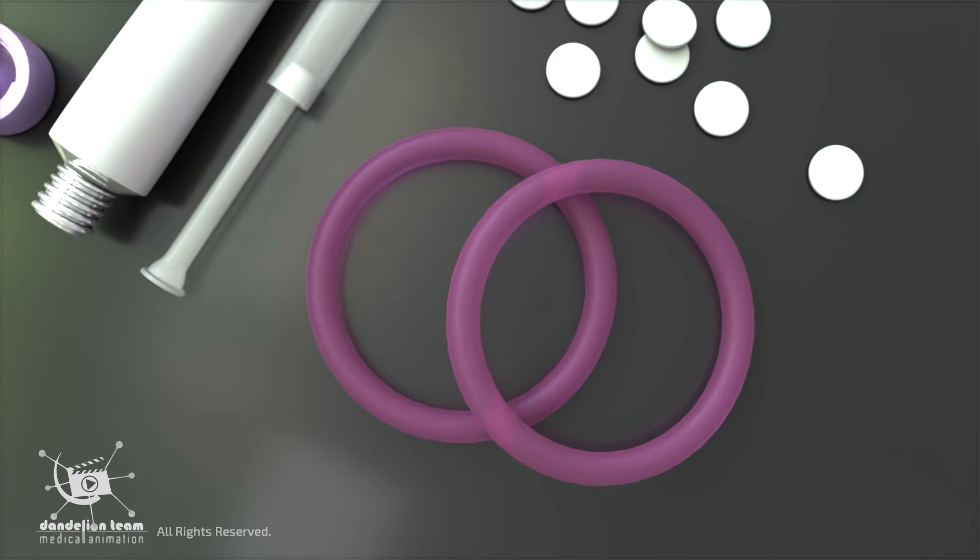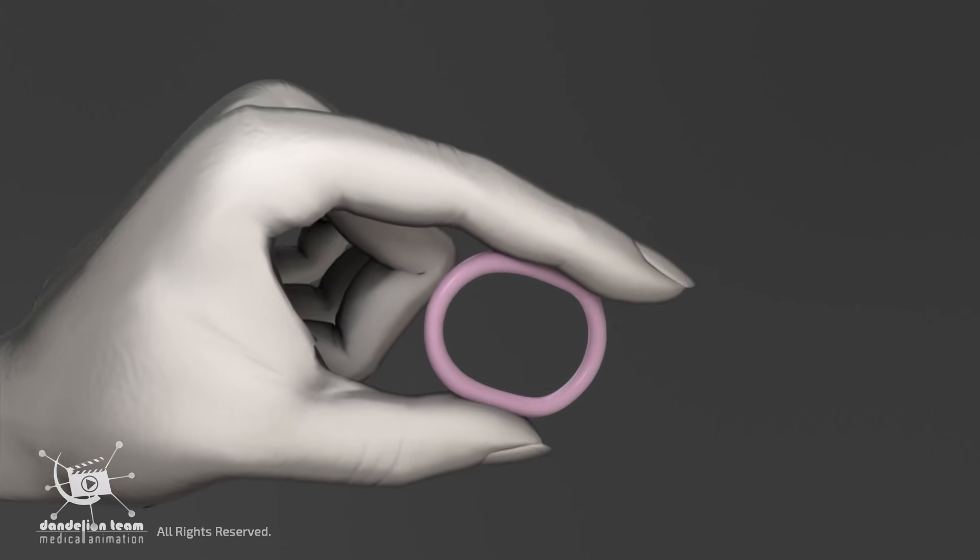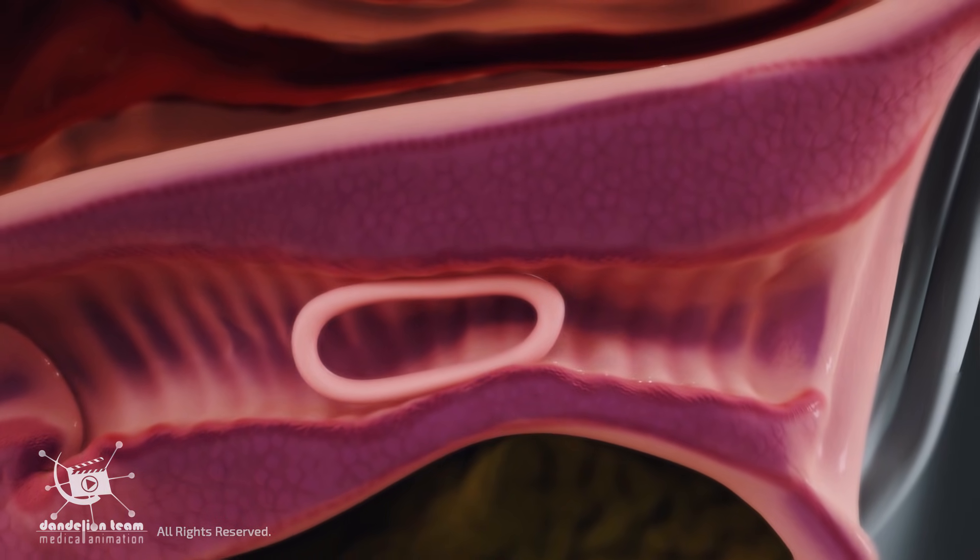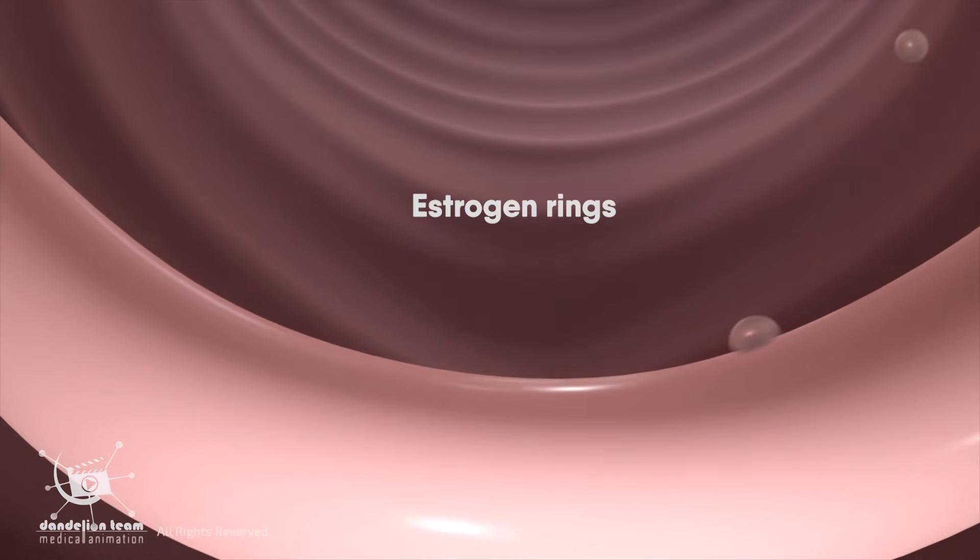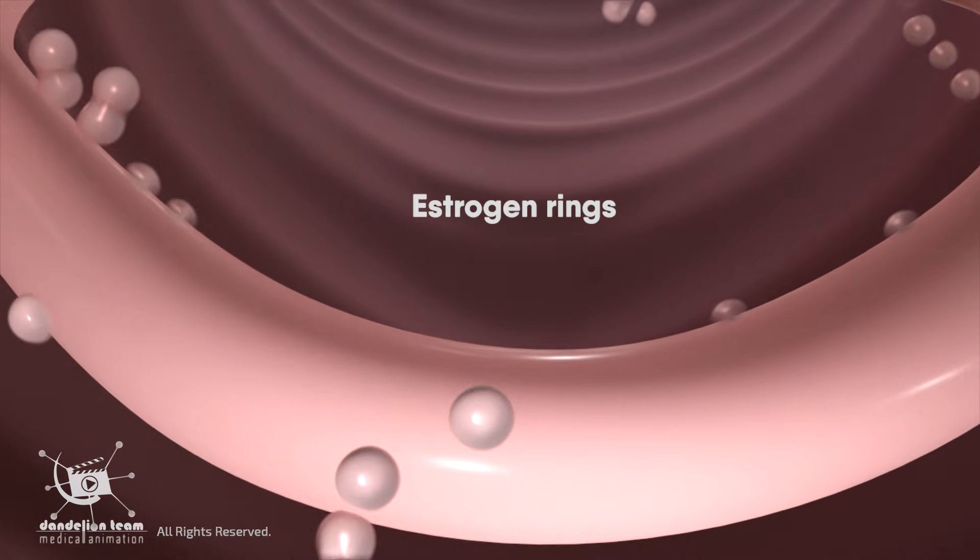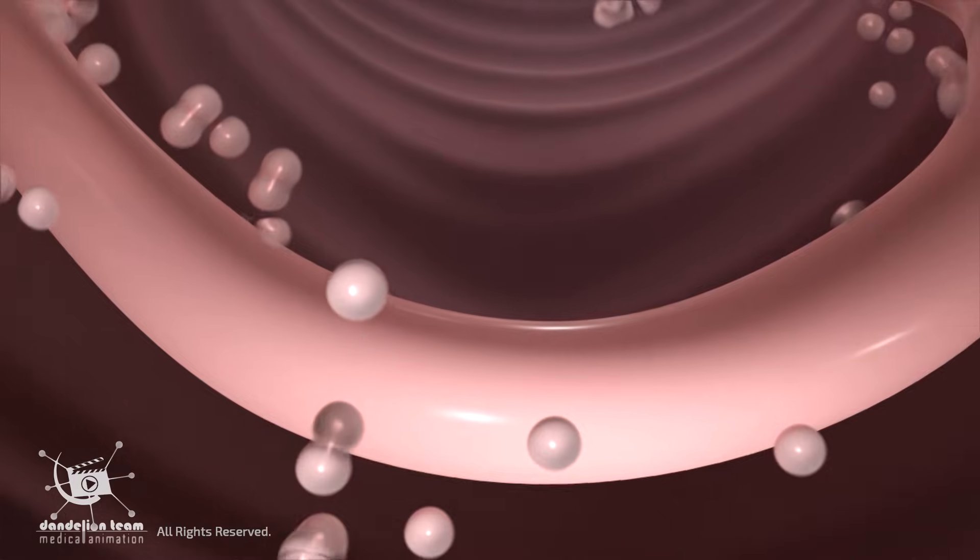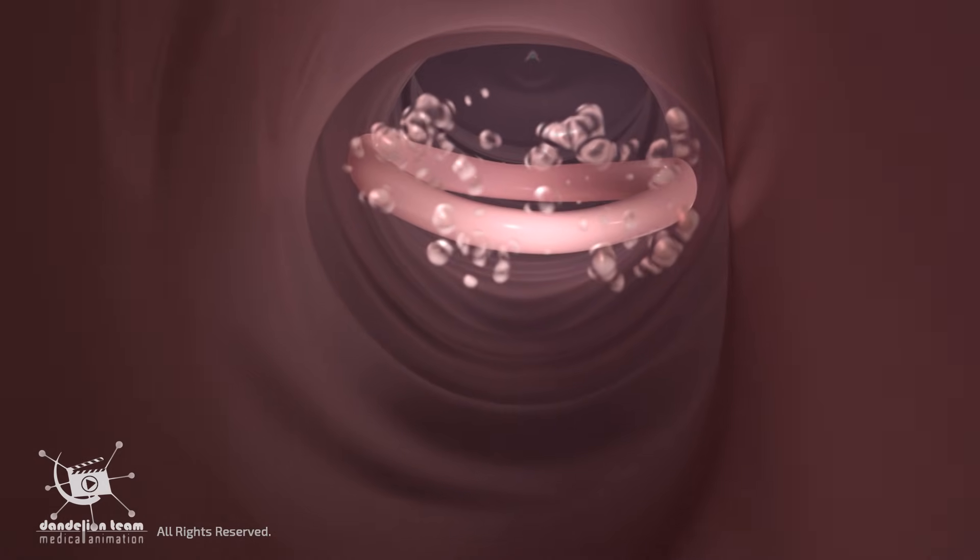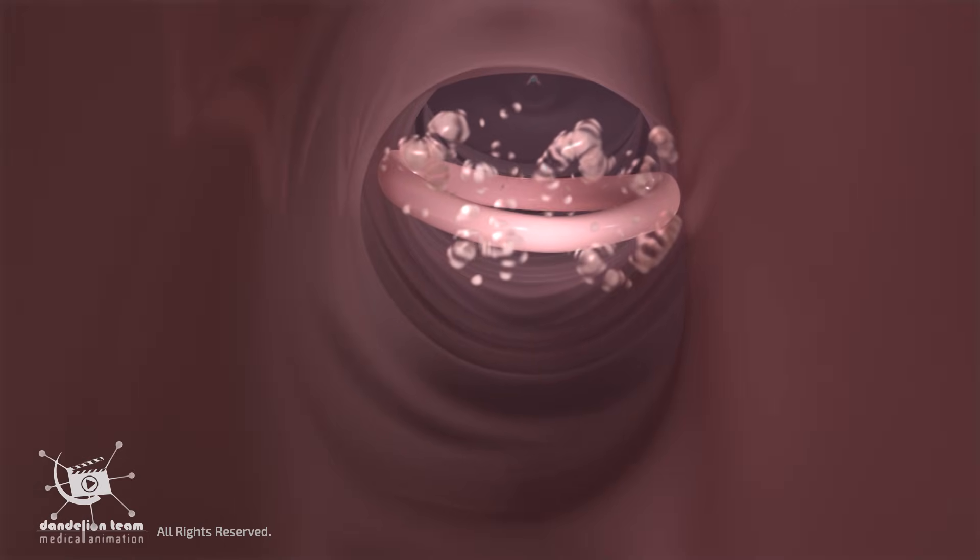Vaginal rings are placed in the vagina by the patient. They release a low dose of estrogen over 90 days. These treatments deliver less estrogen than typical hormone therapy and have fewer risks.